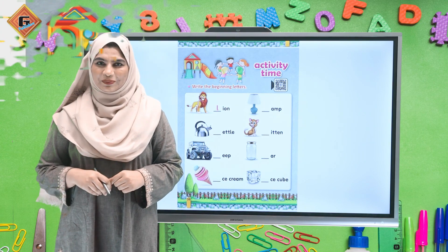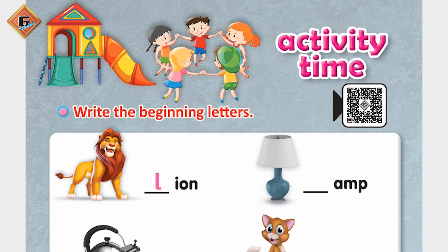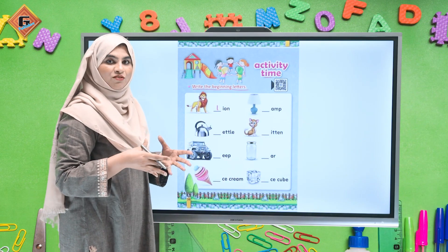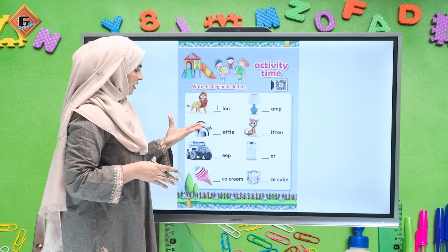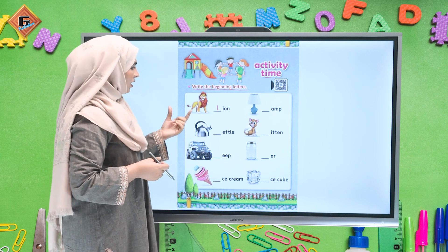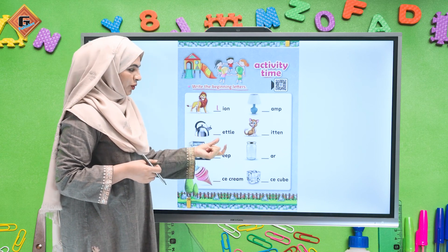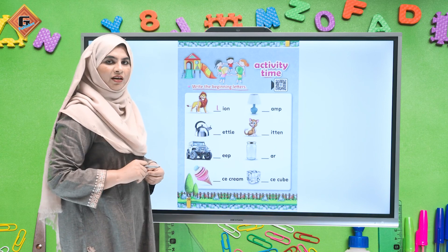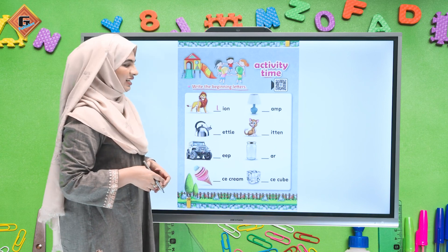Jaise ke pehle bhi humne kuch learning time aur activity time kiye hain, to is video mein bhi hum karne wale hain kuch activity pages aur kuch learning pages. To chaliye start karte hain. So this is page number 36. What do we have here? We have activity time — write the beginning letters. Pictures given hain, unke saamne unke words given hain. Humne simply uska first sound identify karna hai aur wo letter wahan pe likh lena hai.